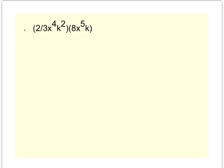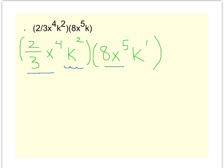On to the last example, I think I'm going to rewrite it quickly. I've got 2/3 x to the 4th k squared times 8x to the 5th k. Remember that k is really k to the 1st. I think what I'll do is remind myself that the x values are going to get multiplied together, and then the k values are going to get multiplied together. It's worth noting that in front of the k is really a 1, and in front of this k is really a 1.